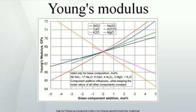In solid mechanics, the slope of the stress-strain curve at any point is called the tangent modulus. The tangent modulus of the initial linear portion of a stress-strain curve is called Young's modulus.